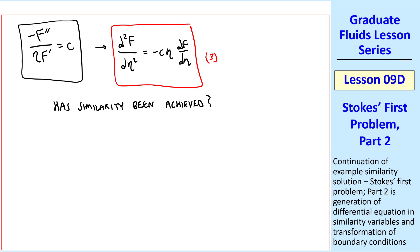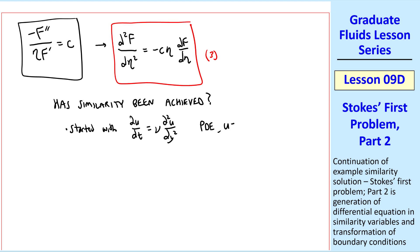Before we attempt to solve this equation, we ask ourselves, has similarity been achieved? Well, we started with our equation in physical variables, which is a PDE, where u is a function of both y and t. And now we have equation 3, which is an ODE with F = F(η) only.